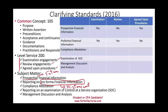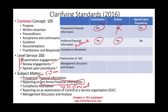For prospective financial information we can conduct an examination or agreed upon procedures. We cannot do a review because in a review you do analytical procedures and inquiries, and it doesn't make sense to do that when the numbers are already kind of guessed or made up. Pro forma financial information covers historical financial statements, so under it we can do an examination and we can do a review — just like what we do with historical financial statements: audit or review. Remember, audit is similar to examination; we just cannot use the word 'audit.' And review makes sense because we are dealing with historical financial data.